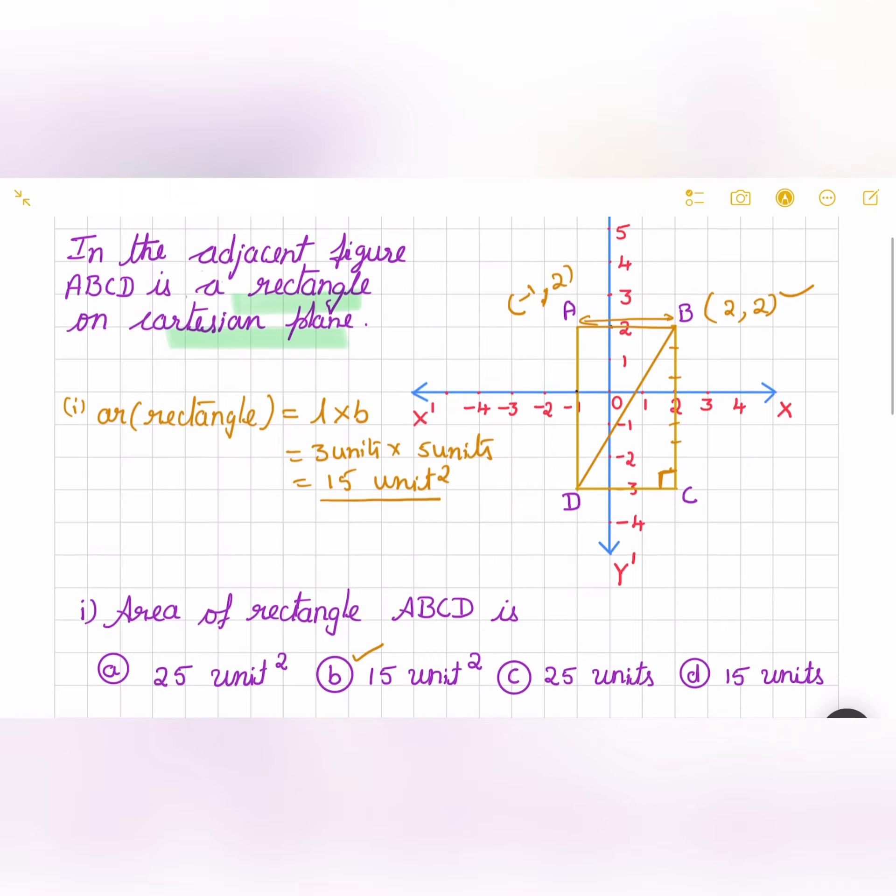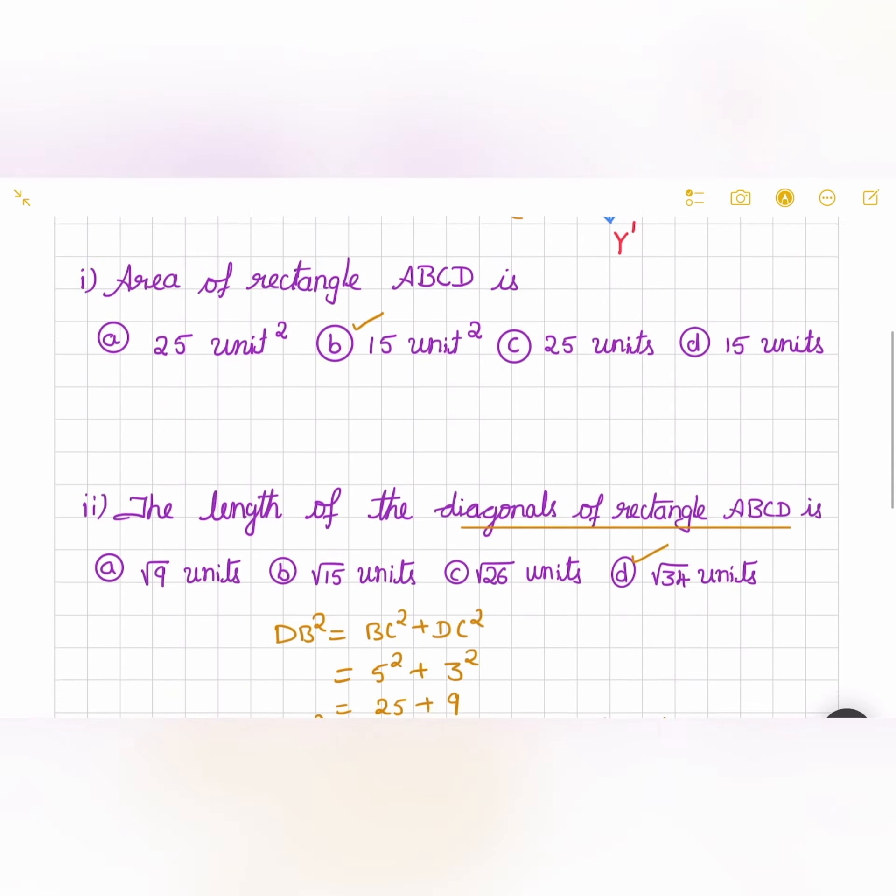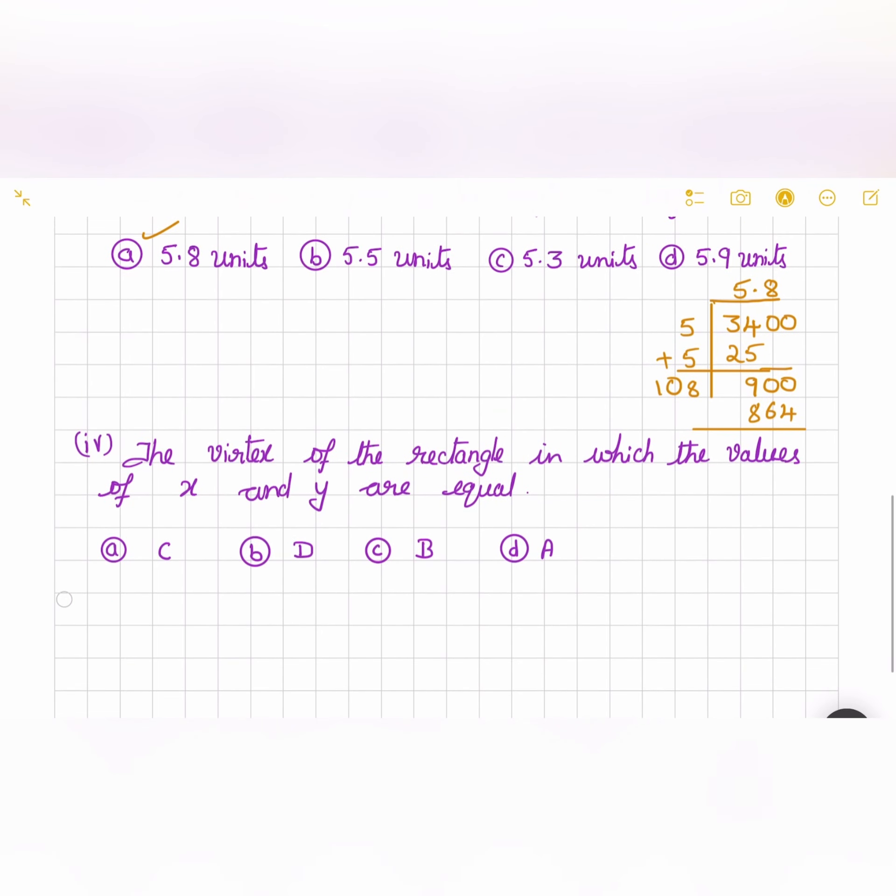B has both coordinates the same. C is 2 and minus 3. D is minus 1 and 3. Therefore the correct option is C. So vertex B has both 2, 2. Therefore the option is C. Thank you for watching.